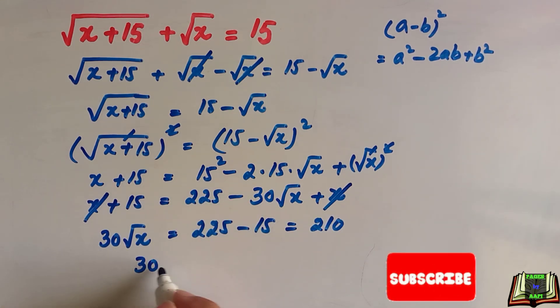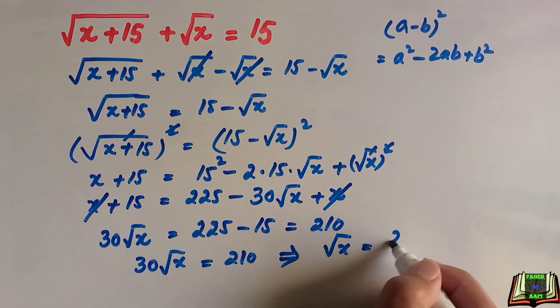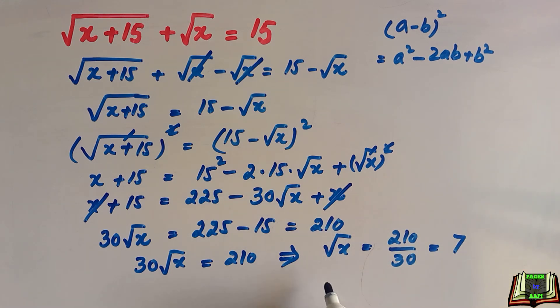We have now 30 times square root of x is equal to 210. Square root of x will be equal to 210 divided by 30 that is equal to 7. Square root of x is equal to 7. As we have to find the value of x,